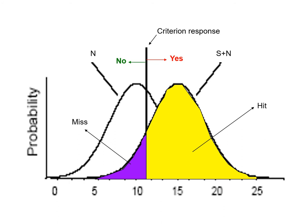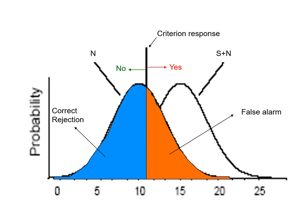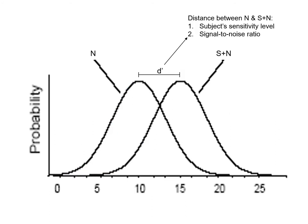Visually, on the right bell curve (signal plus noise), everything to the right of the response criterion is a yes. Everything shaded in yellow is a hit; everything shaded in purple is a miss. Looking at the left bell curve (noise only), everything to the left of the response criterion is a correct rejection, and everything to the right of the criterion but belonging to the left bell curve is a false alarm.